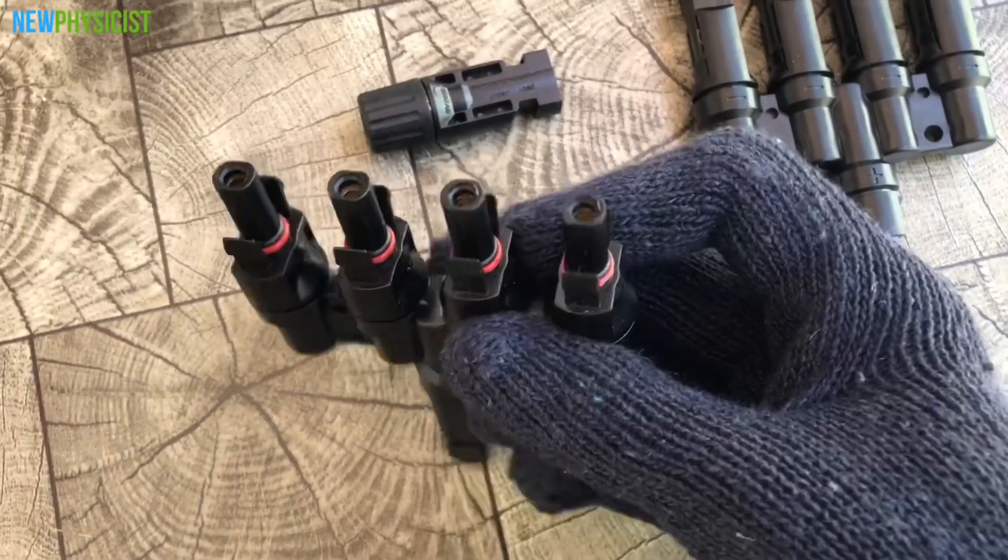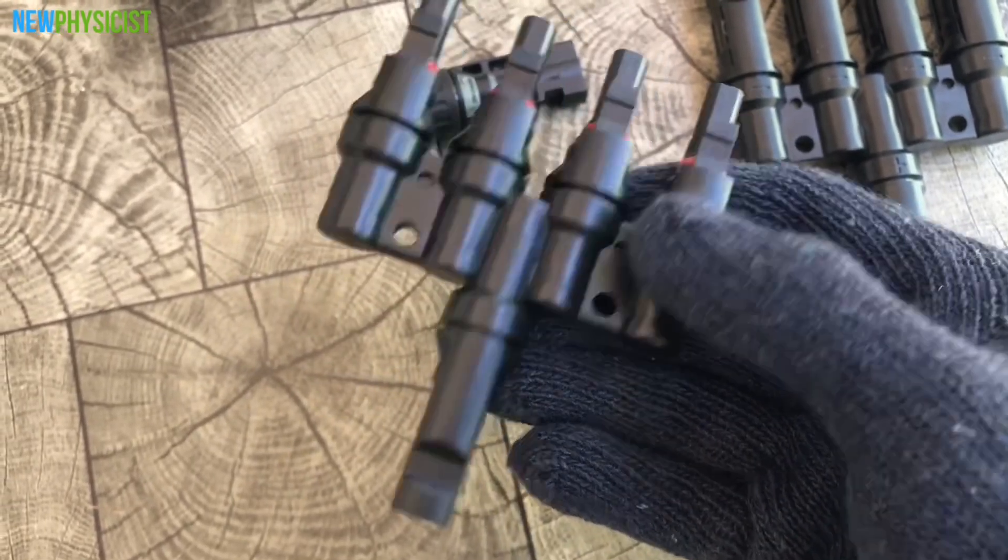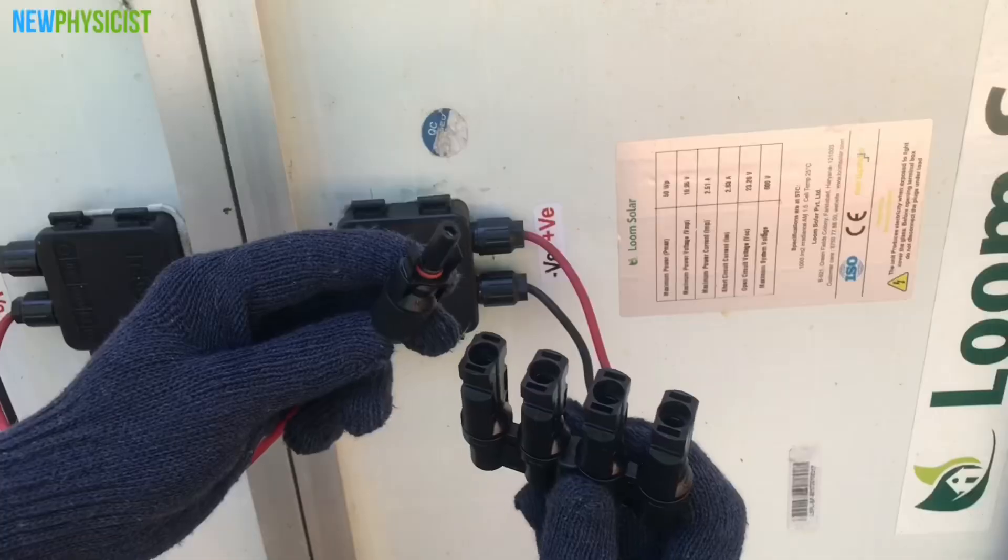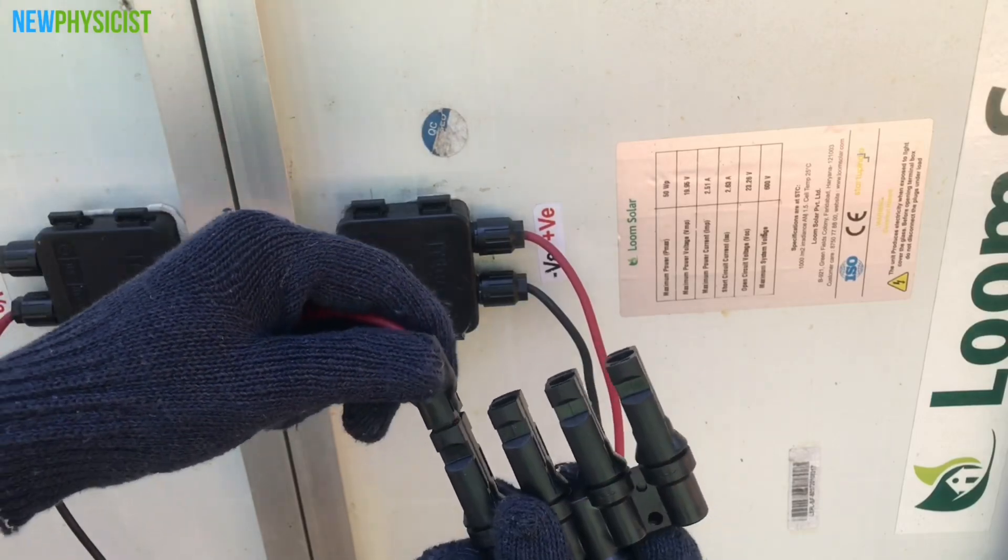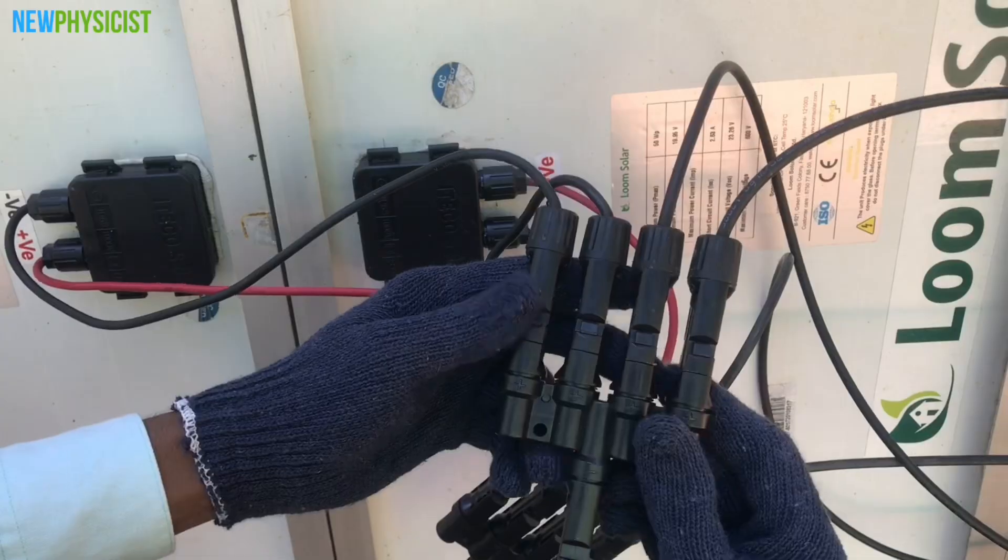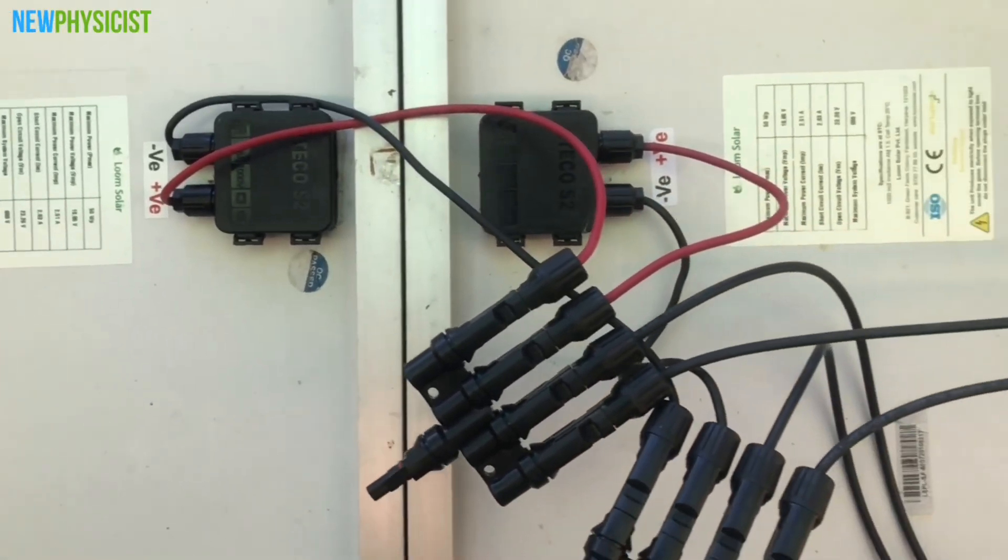We have four in one T4 MC4 branch connectors to easily and effortlessly connect four similar panels in parallel. You can buy this from my Amazon store. Connect all the positive leads to one branch connector and all the negatives to the other. Now we have a common positive and negative output leads to which I'm going to connect the wire using a pair of MC4.